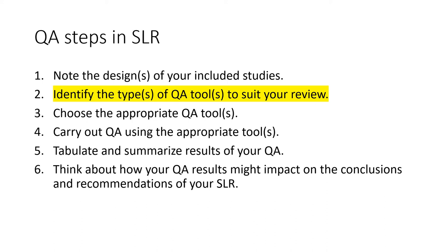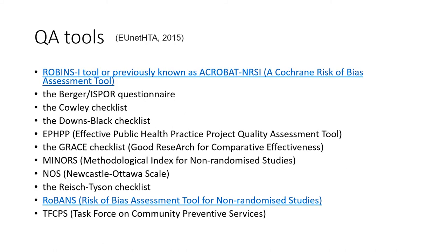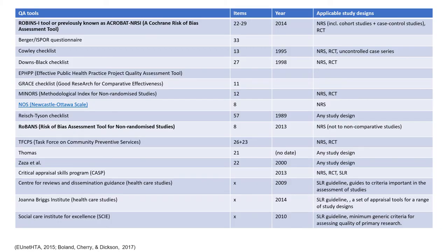The second step is to identify the types of QA tools to suit your review. There is a list of QA tools available — you can also click the link provided in the video description for the slides. Different QA tools have different items, so you need to judge how lengthy, practical, and suitable they are for your review. A comparison table lists different QA tools, how many items are included, the year published, and the applicable study designs.